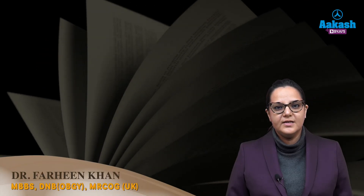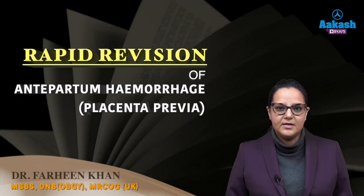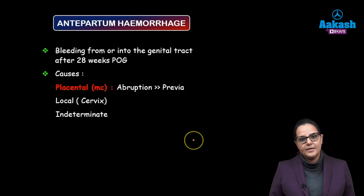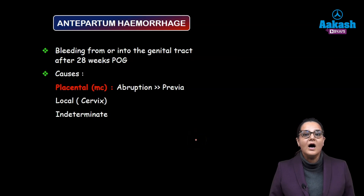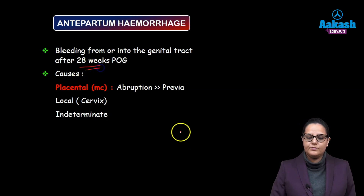Hello friends, I am Dr. Fareen and let's do a rapid revision of antepartum haemorrhage. Antepartum haemorrhage is any bleeding which occurs from or into the genital tract after 28 weeks of period of gestation.